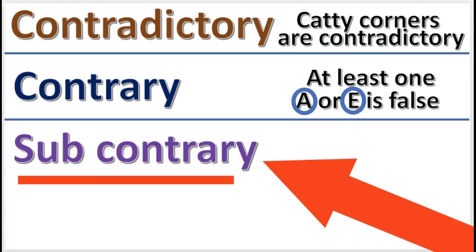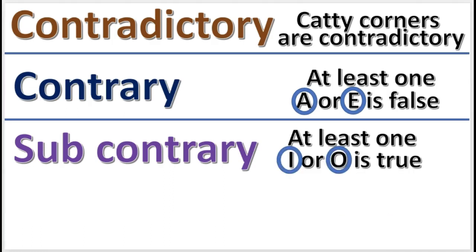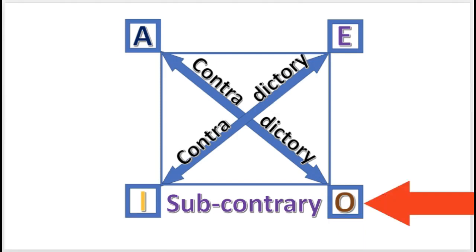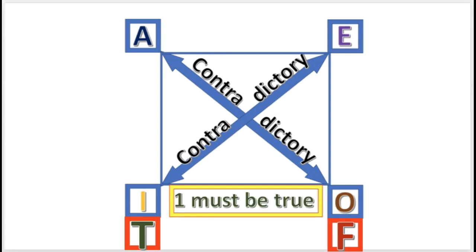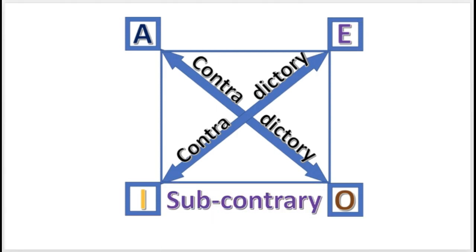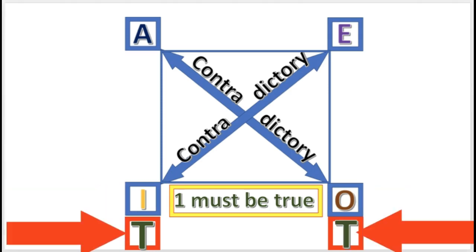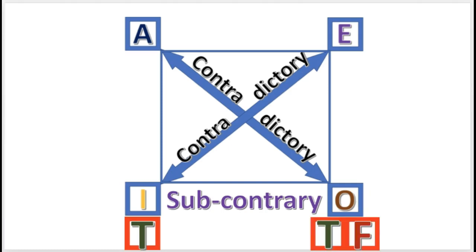Subcontrary is next. The subcontrary rule says at least one of the I or O propositions is true. For example, if I is false, then O must be true. If the O is false, then the I is true — at least one must be true. However, if the I is given as true, then the O has undetermined truth value, because at least one must be true but they could both be true. Since I is already true, O could be true or false — it's undetermined.